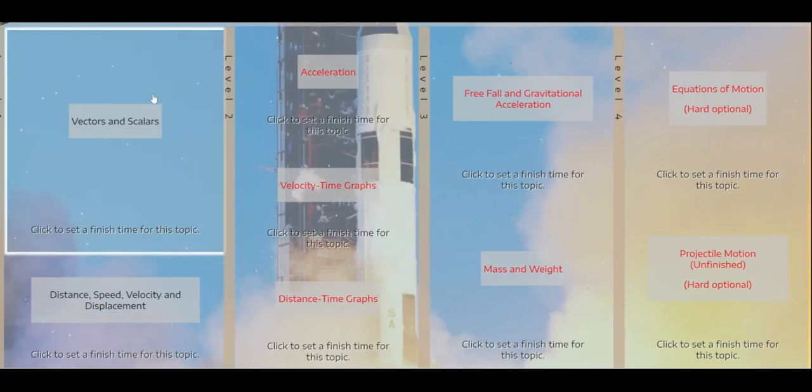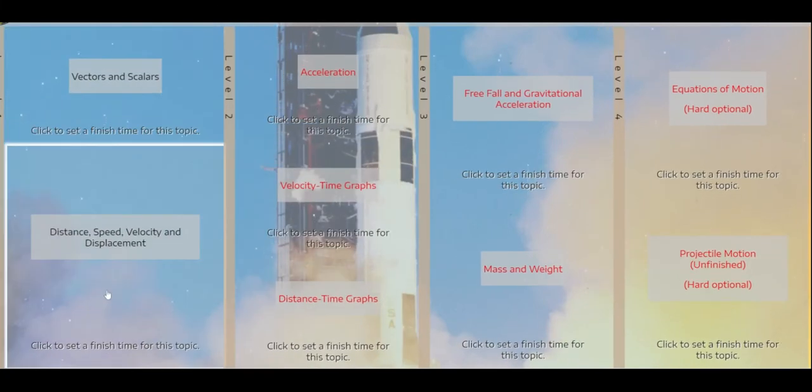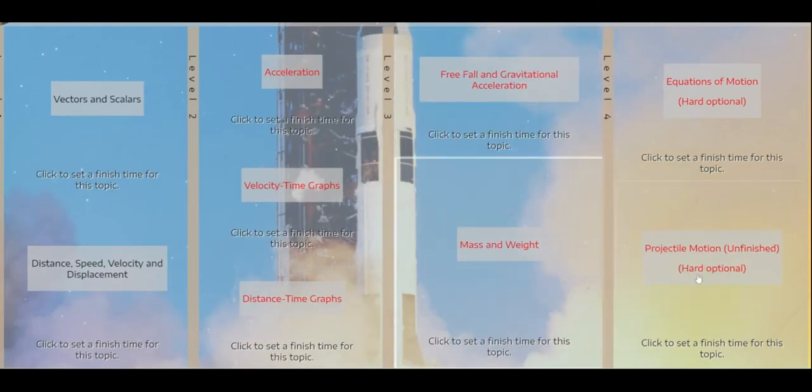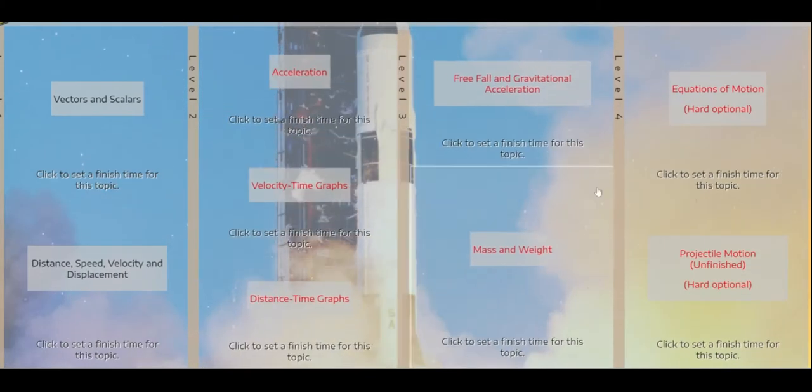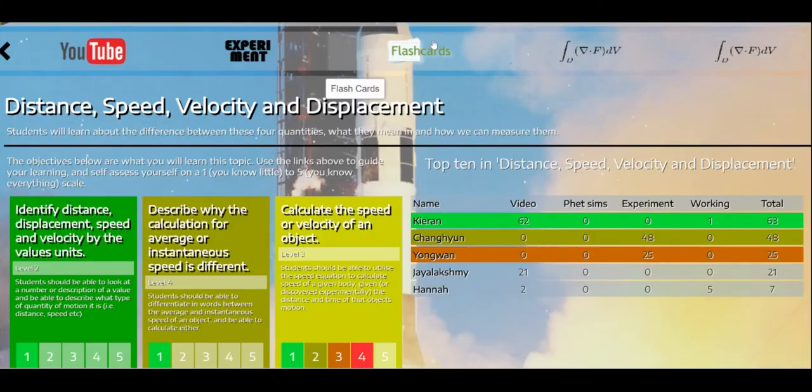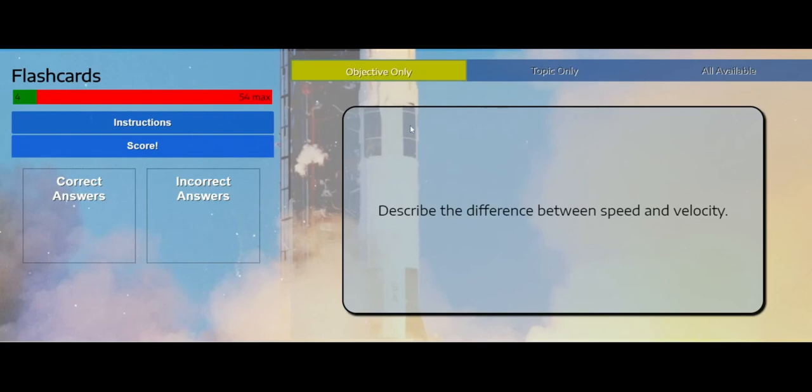So at the moment it should just be flashcards for vectors and scalars and distance, speed, velocity, and displacement. But by the time you get to the end, you'll get flashcards for all of the things you've completed throughout this unit. So for now I just want speed, distance, time.